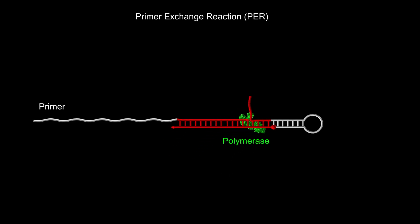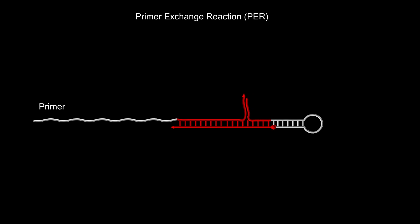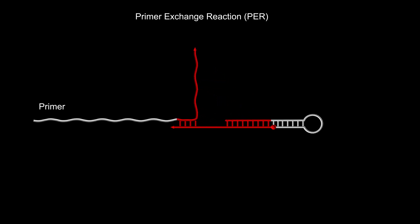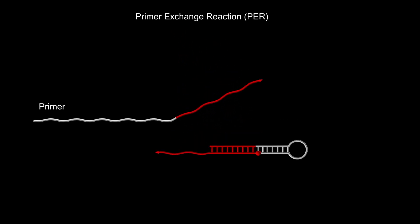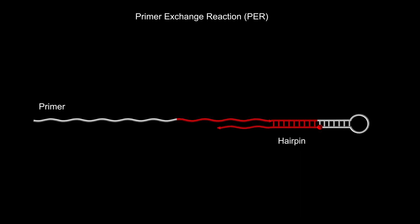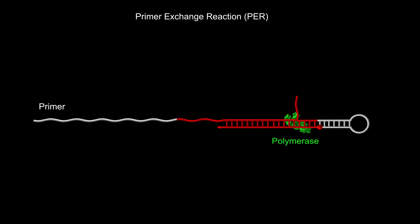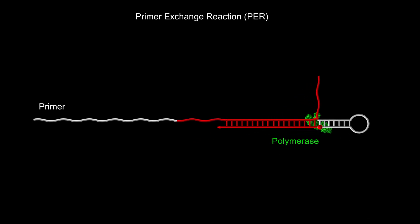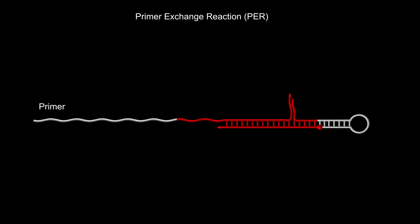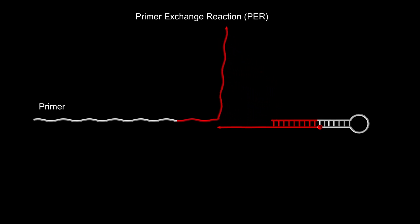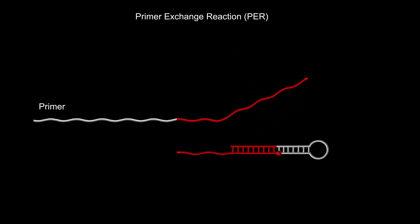Sabre first uses the primer exchange reaction method to synthesize in the test tube a longer concatemer of identical short sequences, shown here in red, with the help of a catalytic self-folding DNA hairpin structure, a primer, and a DNA polymerase enzyme.